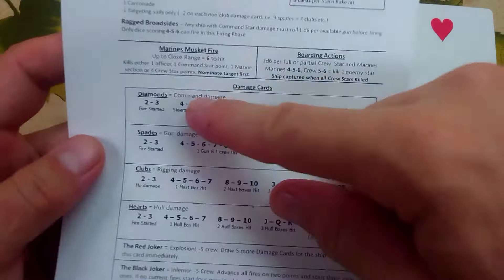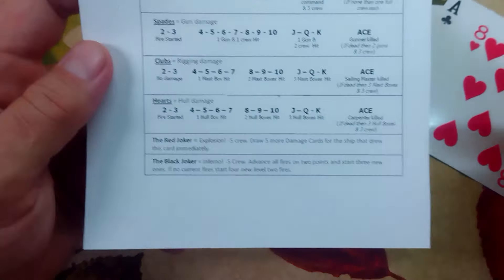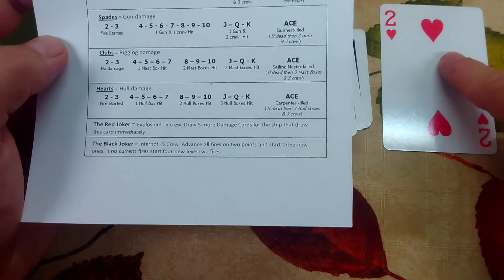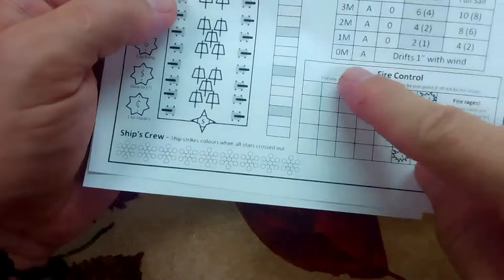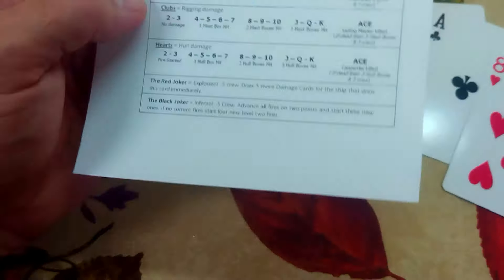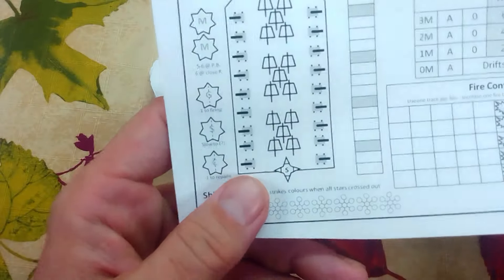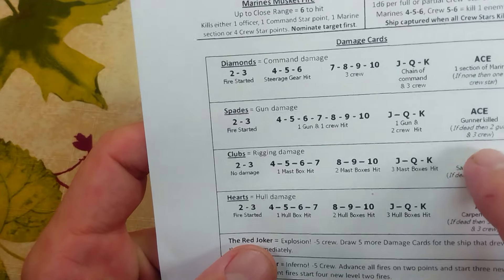So there is stacking damage here. Now the other thing that's interesting that fascinates me is you have to do it one at a time. So you don't draw three cards and then cross all this stuff off. Instead, what happens is I do two. So I have one fire. And then I draw the ace of clubs. The sailing master is killed. And then I draw the eight. So on the eight, I get three crew killed. Now the order is important because if I already have the one fire started and I draw that joker, the black joker, advance all fires two points and start three new fires. That means that I don't get to pick and choose what order that comes in.